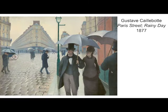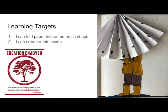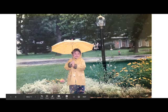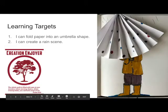Look at all the different umbrellas. We are going to make an umbrella artwork as well. Remember our learning targets: we can fold paper into an umbrella shape and create a rain scene. I'm excited to see what everybody's rain scene looks like. This is kind of what I based mine off of. Any guesses who that is? This is actually me, Miss Crist, when I was probably in kindergarten.